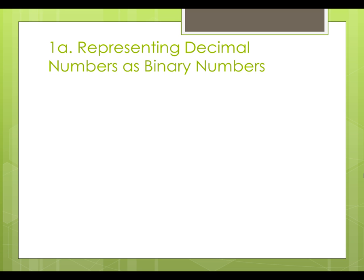To represent decimal numbers as binary numbers, we can use the short division by 2 with remainder method.